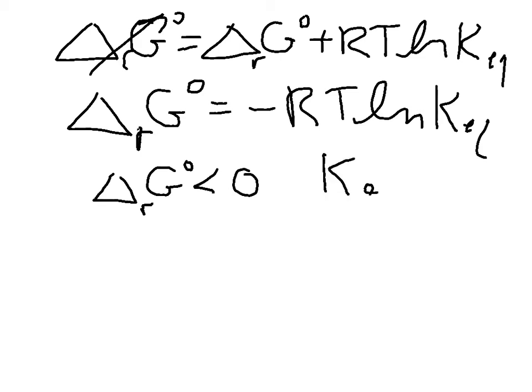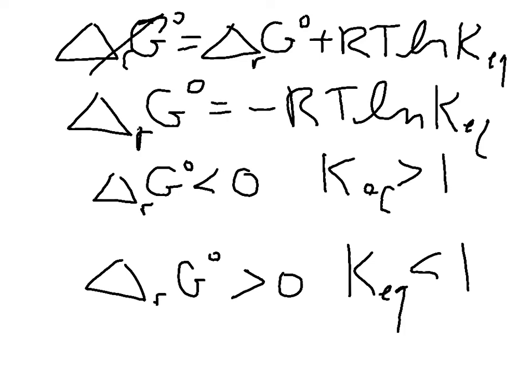Conversely, if we have a delta G standard that is a positive number, that means we have a small equilibrium constant, one that's less than 1.